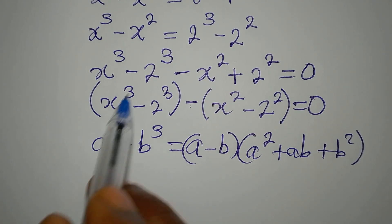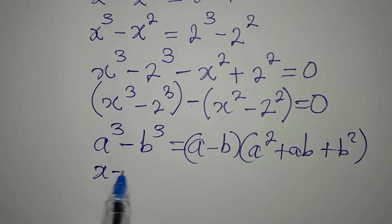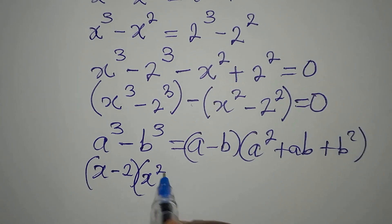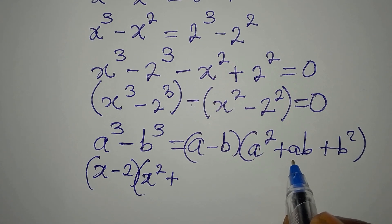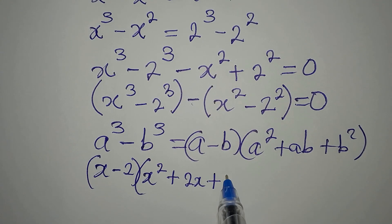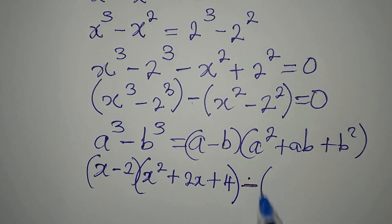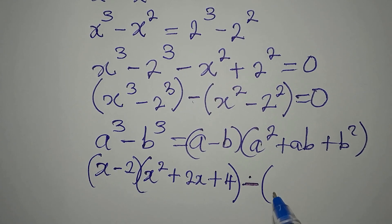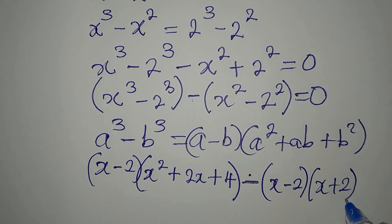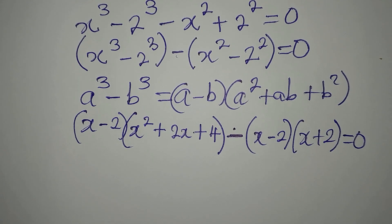So the whole difference of cubes becomes: (x minus 2)(x² plus 2x plus 4). Then minus the difference of two squares, which factors as (x minus 2)(x plus 2), and then we equate everything to zero.